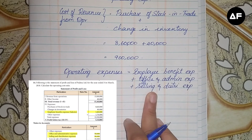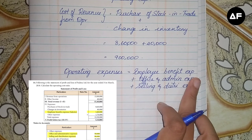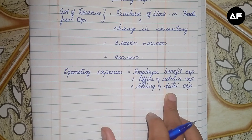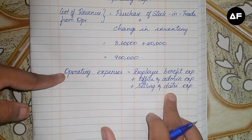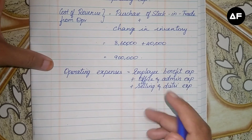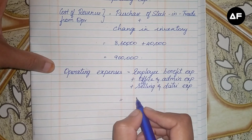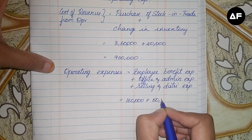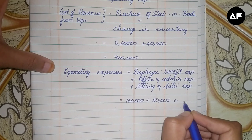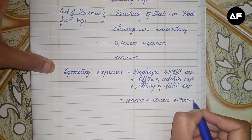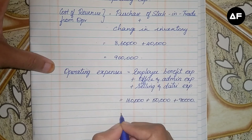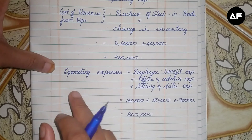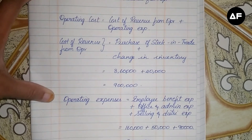Next, calculate the operating expenses. In the statement of profit and loss you have employee benefit expenses, and in the notes of accounts you have office and administration and selling and distribution. Loss on sale of furniture does not come into operating expenses, so we will not include it. Employee benefit expenses are 1 lakh 60,000, plus office and administrative 50,000, plus selling and distribution 90,000, giving operating expenses of 3 lakhs.